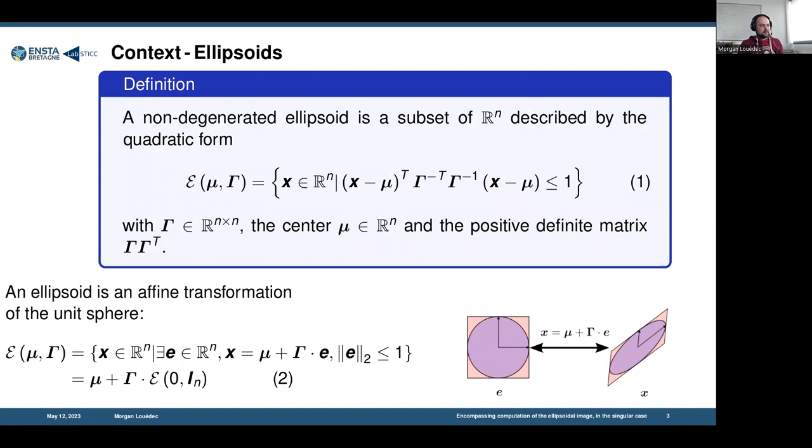What's also interesting is that there is an affine transformation from the unit sphere to any ellipsoid using the center and this gamma matrix.